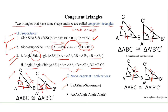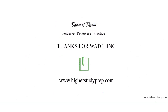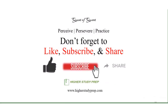However, if the combination involves two sides equal with an angle that is not included between those sides, this combination only specifies the size of the two triangles and proves similarity, not congruence. Don't forget to like, subscribe, and share. Thank you from Higher Study Prep.